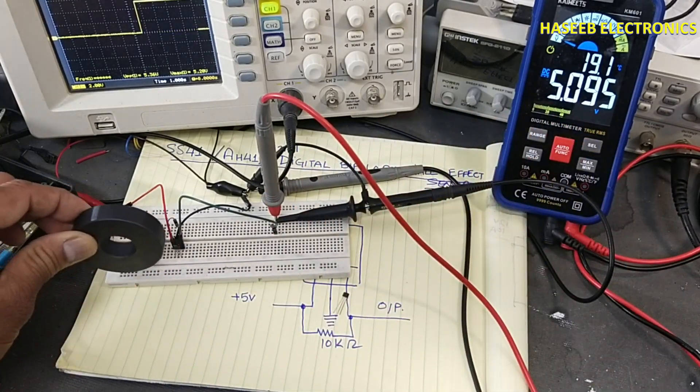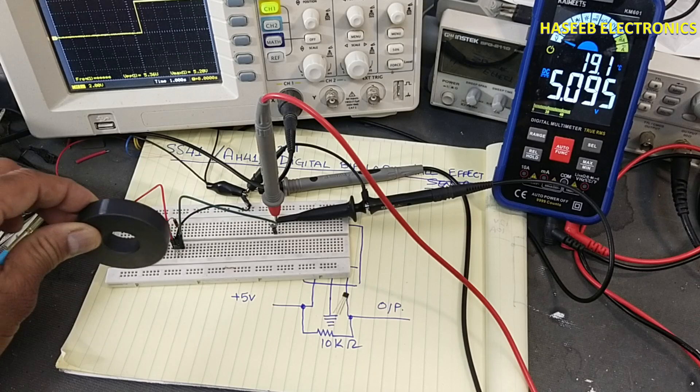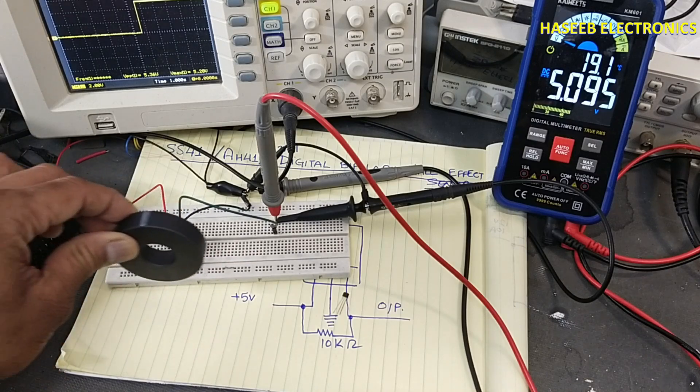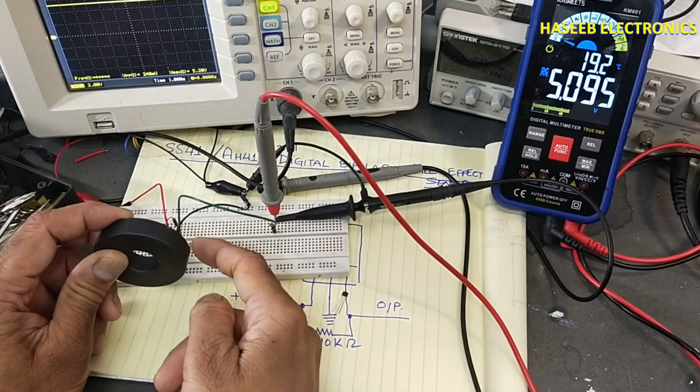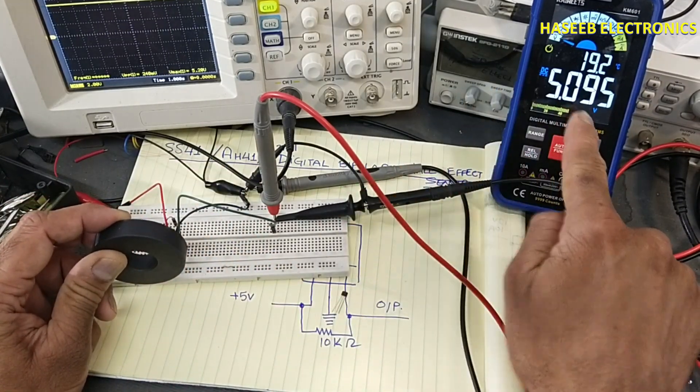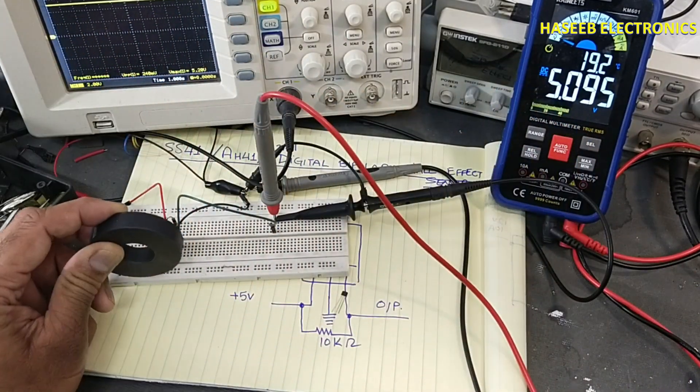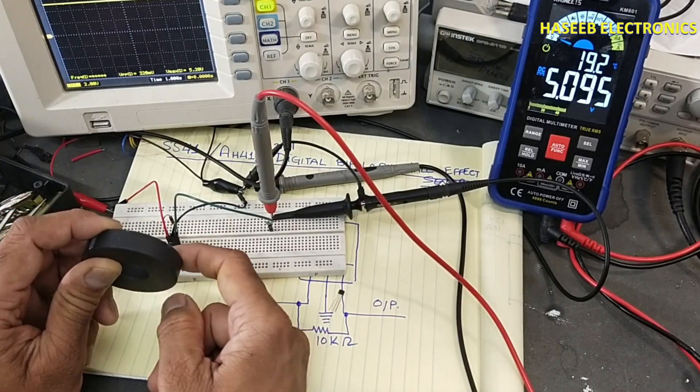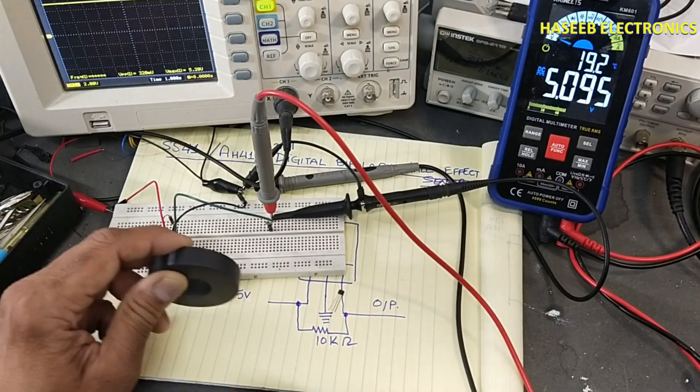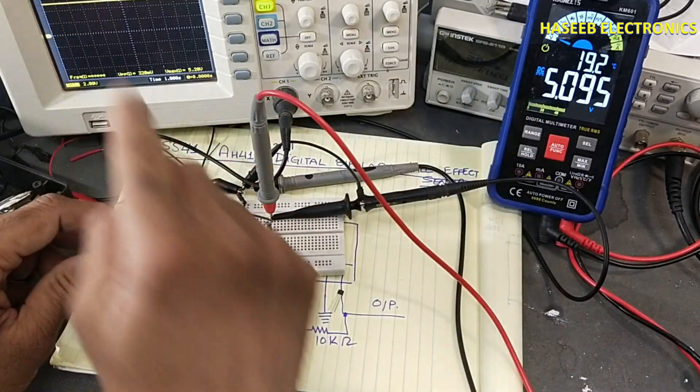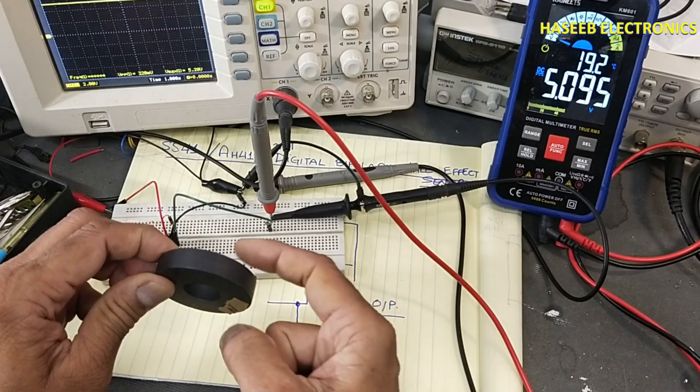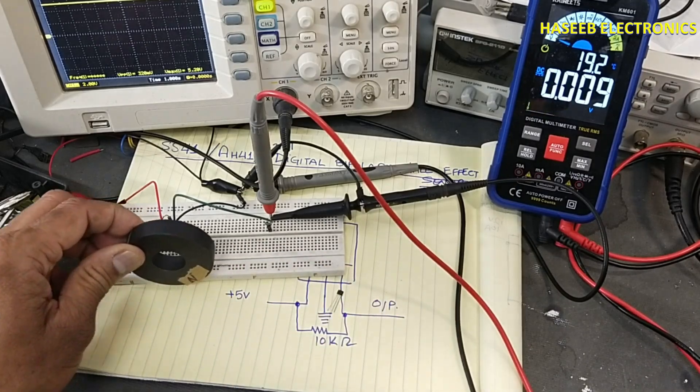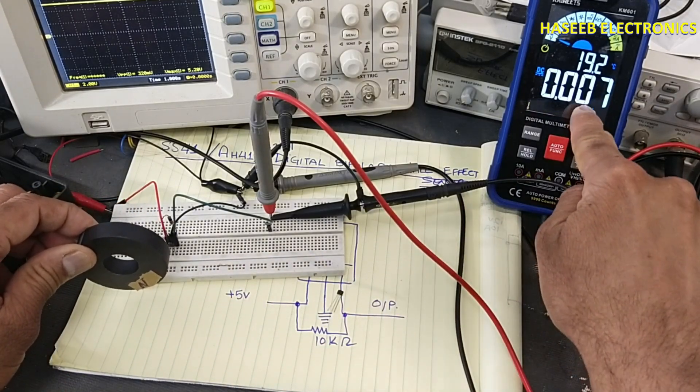If the north pole will remain in front or keep in front again and again, it will not change its output. Now the output is latched 5 volt logic high until the magnet pole will change. When the south pole is in front of this sensor, the output will low.